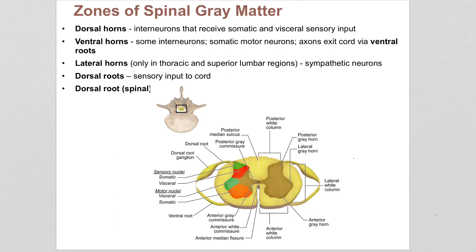In this video we're talking spinal cord anatomy. The goal is to go through the basics of how the spinal cord is set up as far as gray matter and white matter, and then talk about how that connects to the nerves that leave the body and either bring information in from sensory nerves or carry information out to motor nerves.